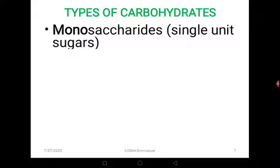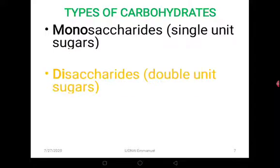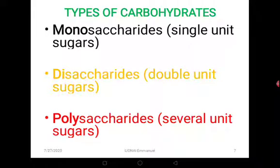Now we are going to look at the types of carbohydrates. There are majorly three. There are those we call monosaccharides, which are single sugar units. Then we have disaccharides, which are double sugar units. And then we have polysaccharides, which involve very many sugar units. From the word mono — mono means one, di means two, and poly means many. So we have the three types of carbohydrates: monosaccharides, disaccharides, and polysaccharides.